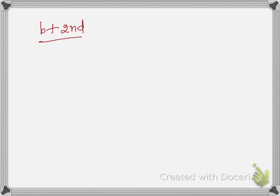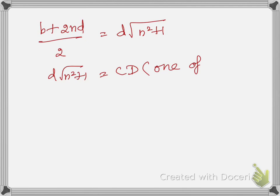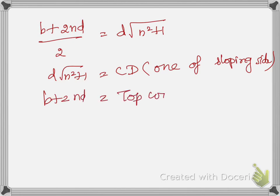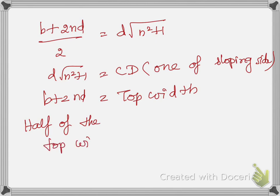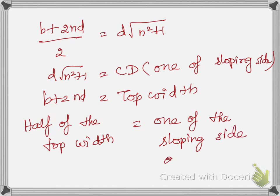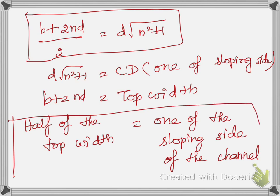Rearranging: (B + 2nD)/2 = D·√(n²+1). Here (B + 2nD)/2 is half of the top width and D·√(n²+1) is one sloping side. Therefore, the first condition is: half of the top width must equal one of the sloping sides of the trapezoidal channel.